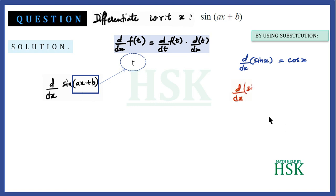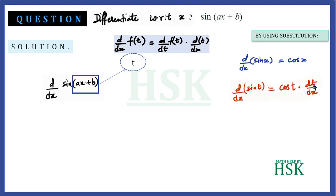So d/dx of f(t) equals d/dt of f(t) — that is, differentiate sin with respect to t. So d/dt of sin(t) is equal to cos(t). Further, we multiply that value with d/dx of t.